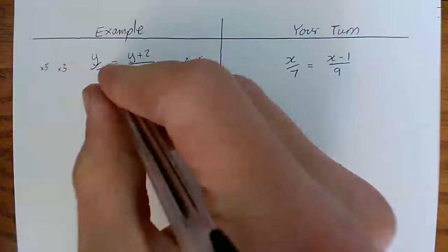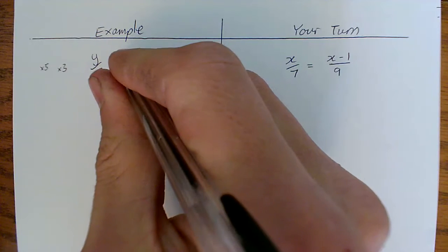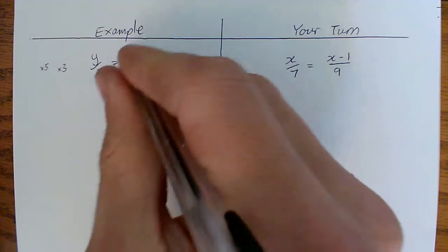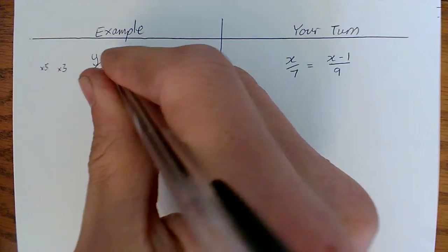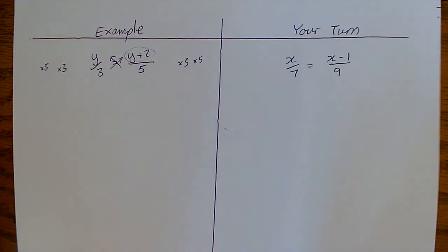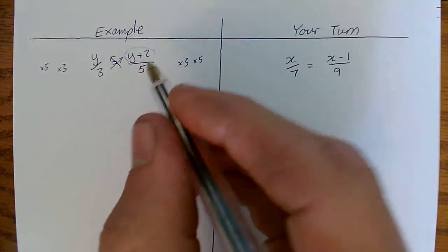Now this little trick is often called cross multiplying because we're doing 3 times this, we're doing 5 times that. So cross multiplying is a clever way to sort out something like this. So let's do that.